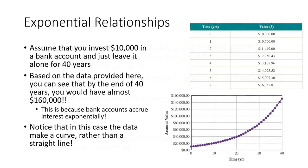Assume that you invest $10,000 in a bank account and just leave it alone for 40 years. Based on what you have here, by the end of 40 years, you would have almost $160,000. This is because bank accounts accrue interest and accrue money exponentially.